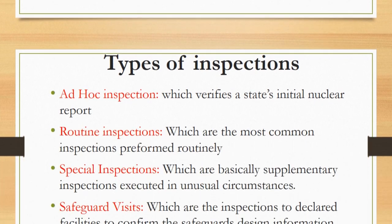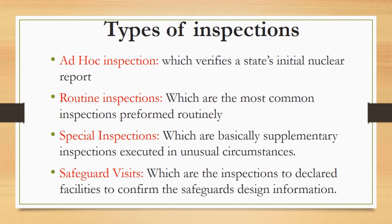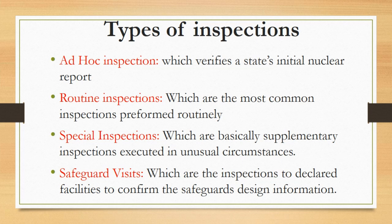Types of Inspections. There are four types of inspections under IAEA. First, ad hoc inspection, which verifies a state's initial nuclear report. Second, routine inspections, which are the most common inspections performed routinely. Third, special inspections, which are supplementary inspections executed in unusual circumstances. Fourth, safeguards visits, which are inspections to declared facilities to confirm the safeguards design information.